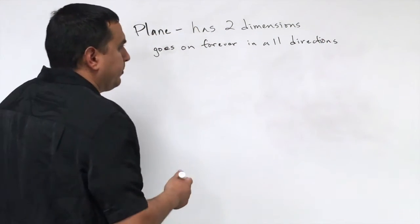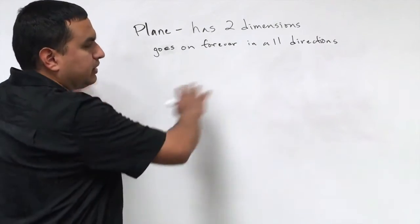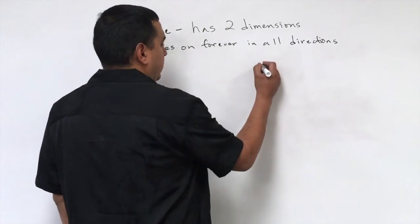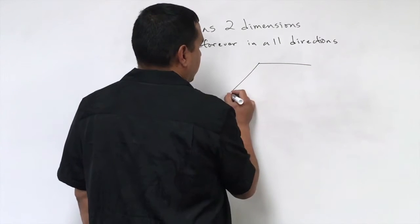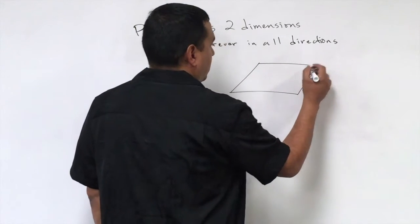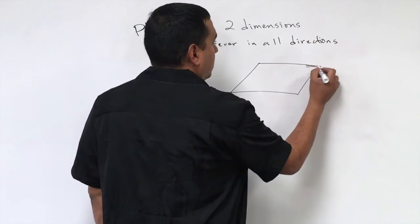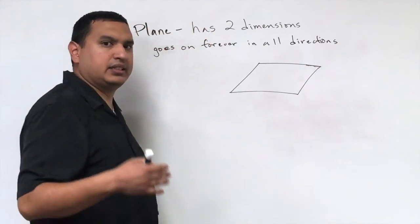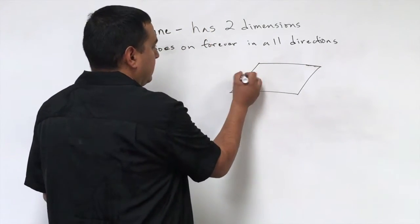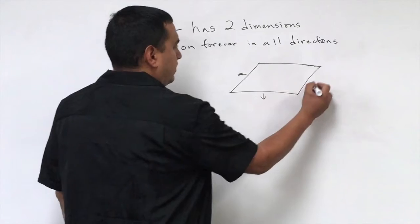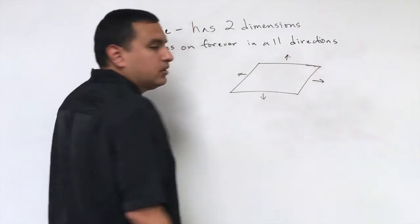So like this surface here, this whiteboard, would be considered a plane. Usually the way it's drawn is you'll see it as a parallelogram, something like that. But the idea is that it's understood and it's implied that it goes forever in all of these directions.